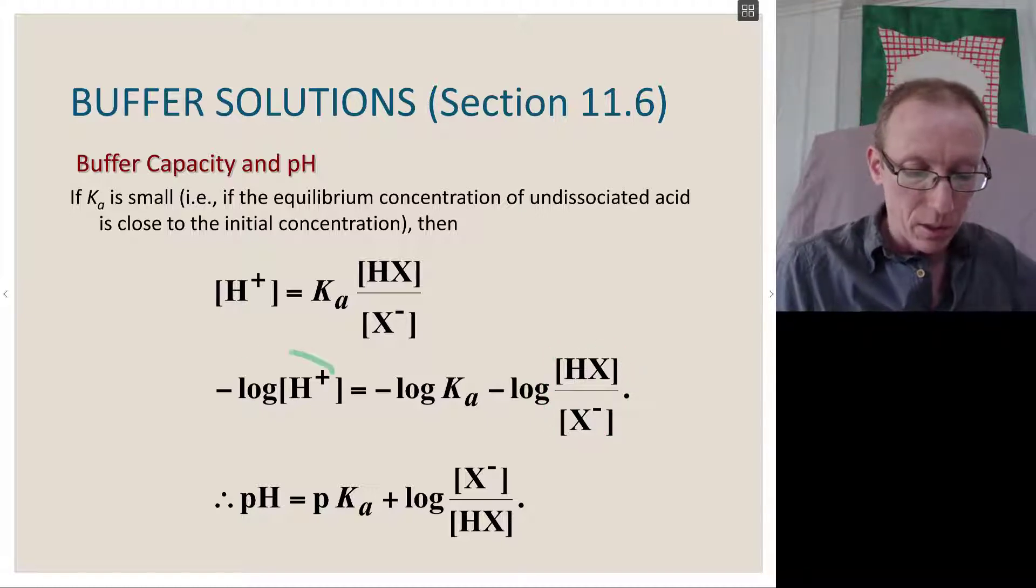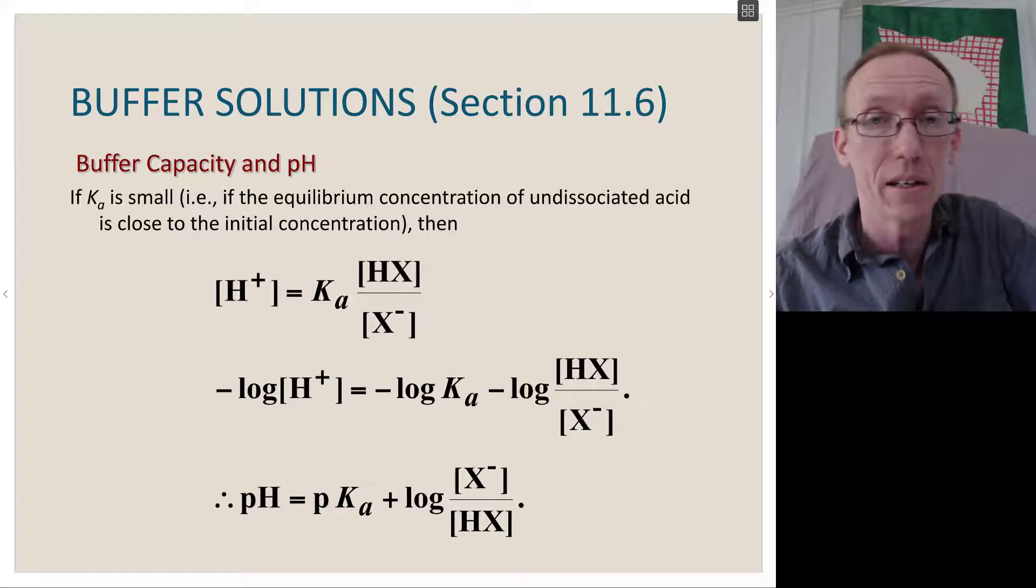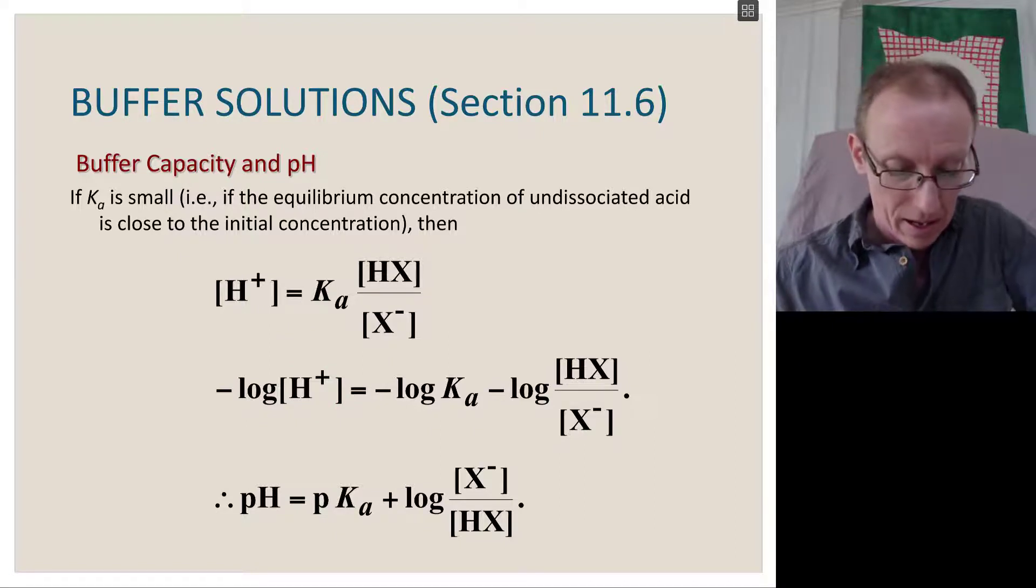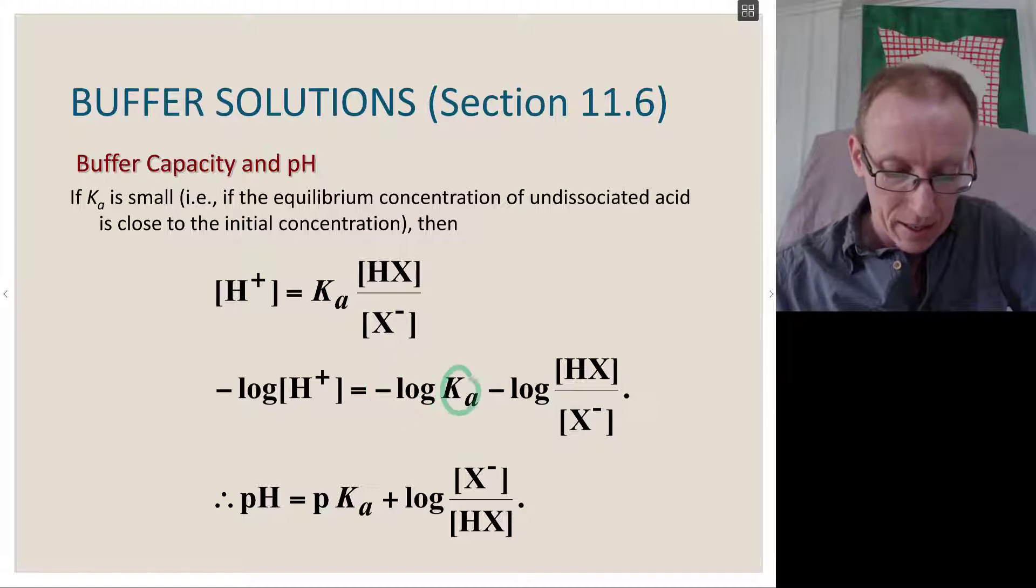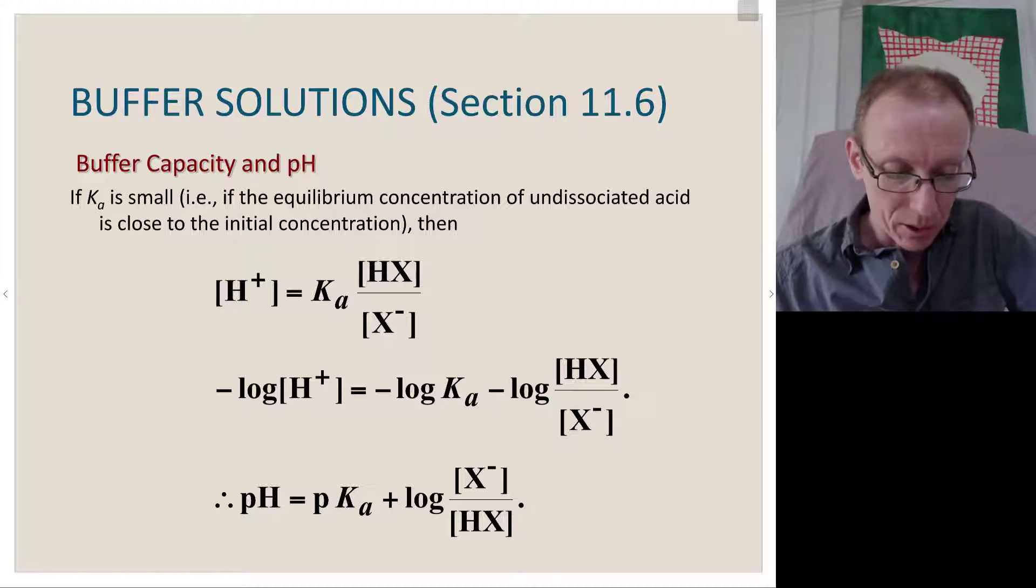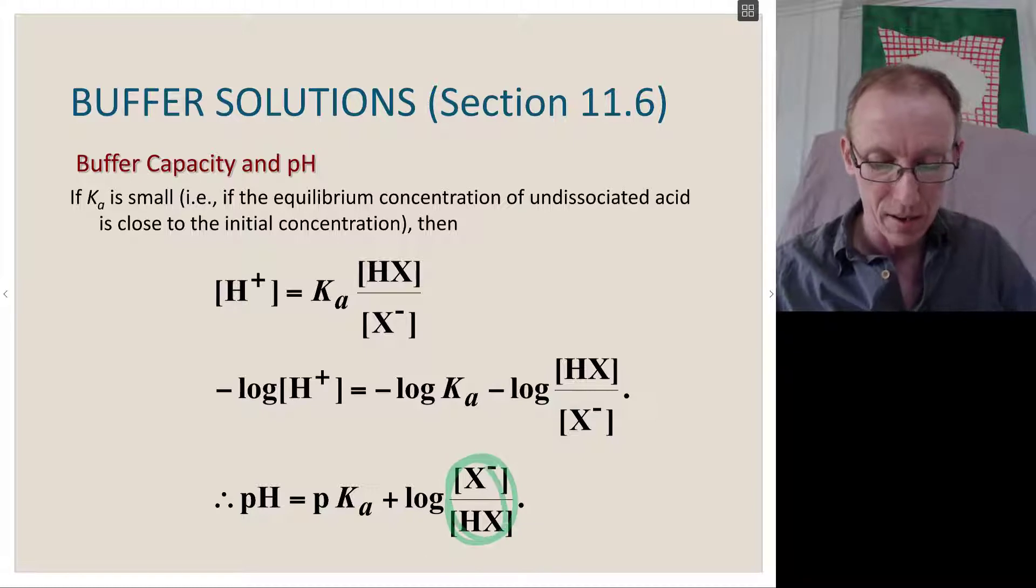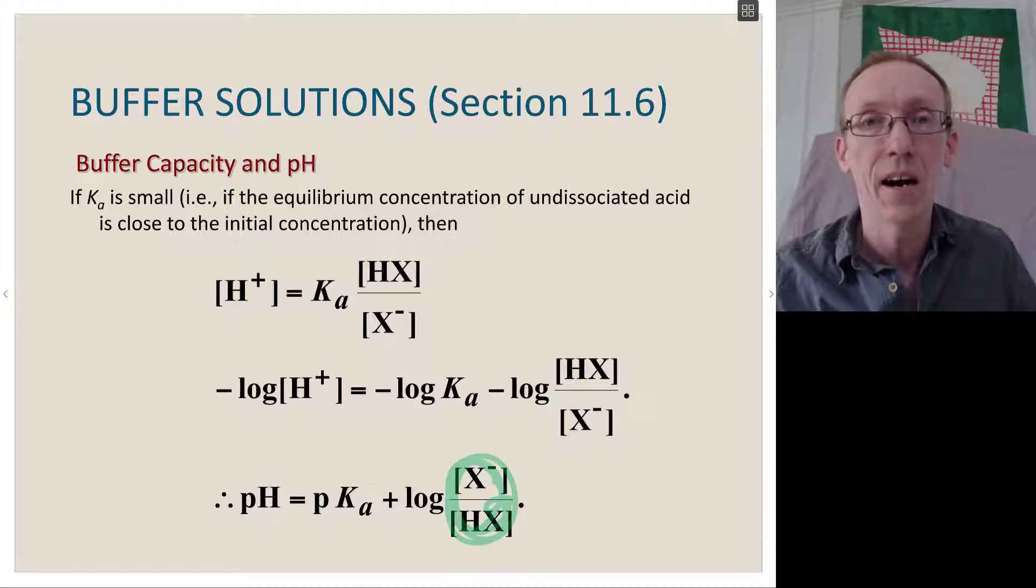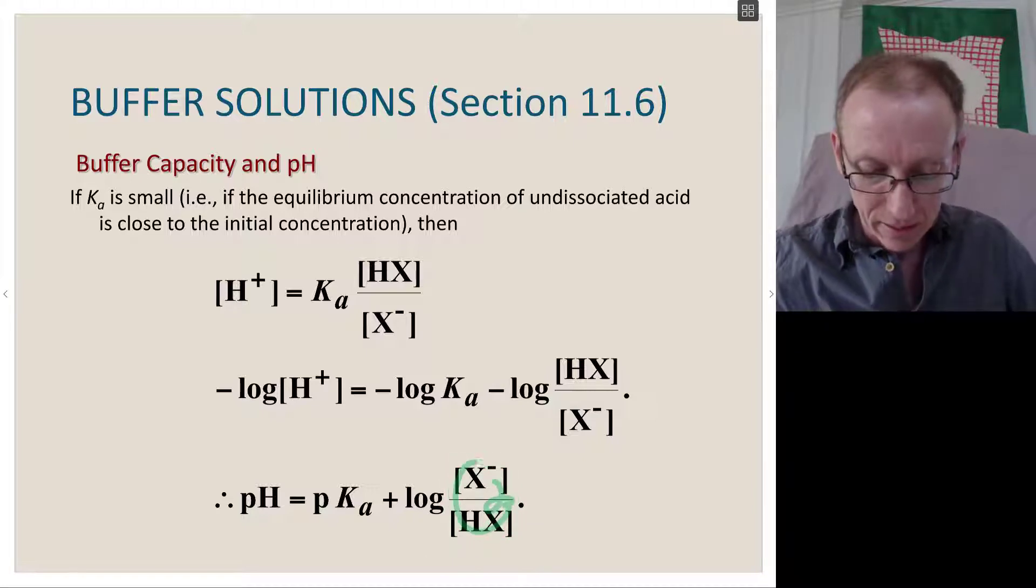Because negative log of proton concentration is the pH and negative log of Ka is the pKa, which is a constant for certain species, we have an equation where pH equals the pKa of the species we're interested in plus the log of the ratio of concentrations of our conjugate base over our weak acid.